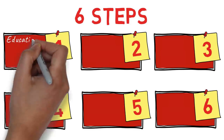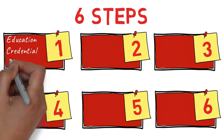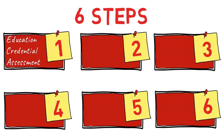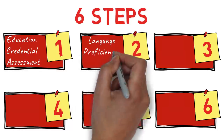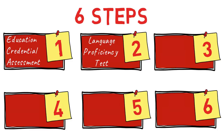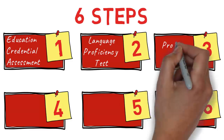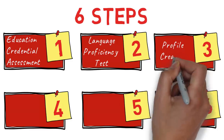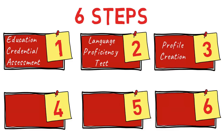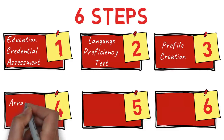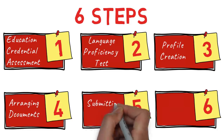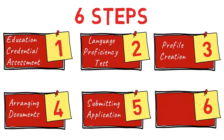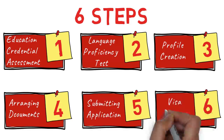I've divided the complete process into six steps: first, education credential assessment; second, language proficiency test; third, creating the Express Entry profile; fourth, arranging the documents; fifth, submitting the application; and the last one is visa stamping.